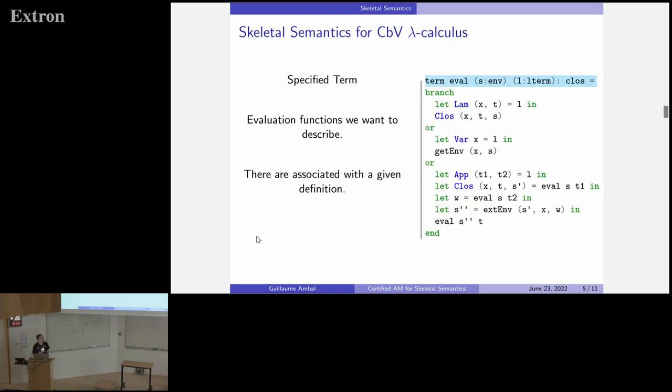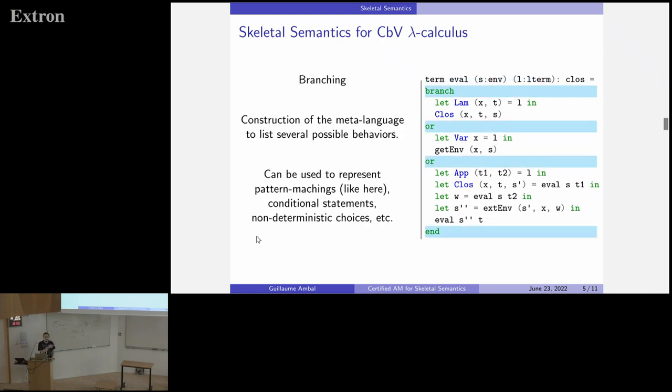And so the important part is that you can define the semantics of your language with this. So for the evaluation of lambda terms, you say that if you want to evaluate a lambda term within an environment, here's the definition, here's the semantics. And the weird thing about skeletal semantics is we have something called the branching, which is a bit general. It's just a way to list several possible behaviors. So it's a non-deterministic choice between several behaviors, and we can get something deterministic by combining it with destructive lets. So when you see the line let lambda xt equals L, what happens is that if the lambda term L looks like a lambda abstraction, it will work as intended, and x and t will be bound as expected. And so with this branching, you can list all three possible behaviors of evaluating lambda terms and get something.